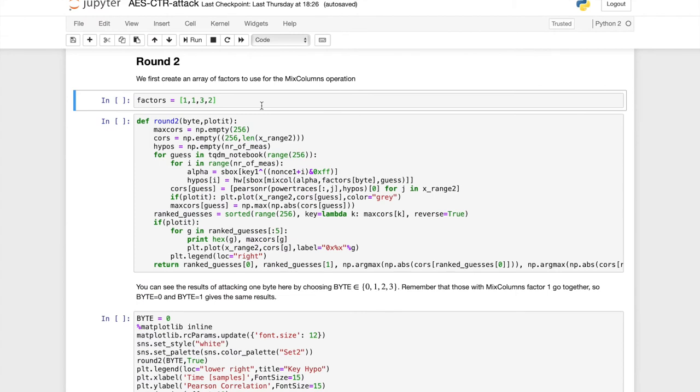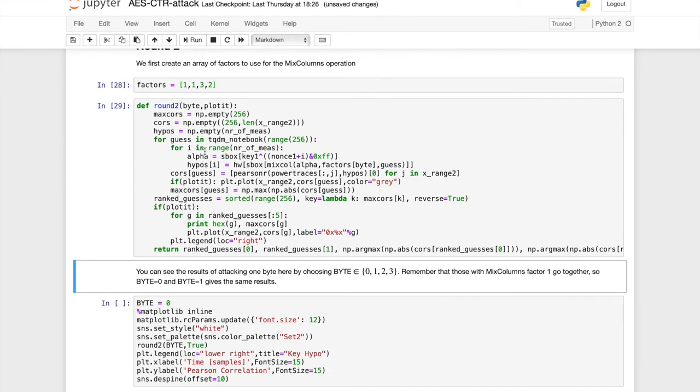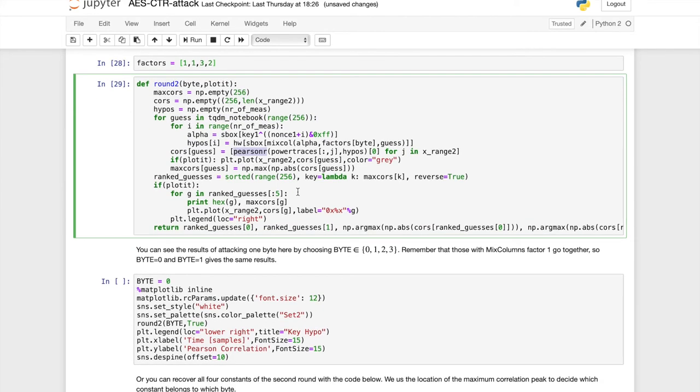So we return to the notebook and here we have those four mixed columns factors that we need to recover each of the bytes of the column. And then the code for the second round is pretty similar to that from the first round, except now we only have to guess 2 to the power 8 times. For the rest, we're again computing hypothesis and Pearson correlation and etc.